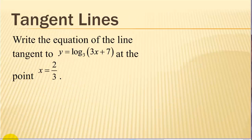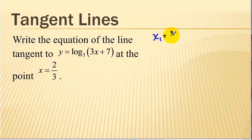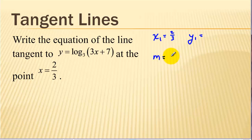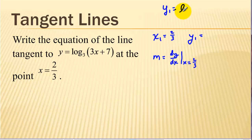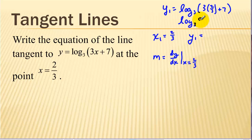Our last example is to apply derivatives to find the equation of a tangent line. We need to find three things: x sub 1, which we're given; y sub 1, found by plugging 2/3 into our y function; and the slope, which is the derivative of y evaluated at x sub 1 equals 2/3. Finding y sub 1: we calculate log base 3 of (3 times 2/3) plus 7, which is 9. So we get log base 3 of 9. Logarithms ask what power we raise 3 to in order to get 9, and that's 2. So y sub 1 is 2.